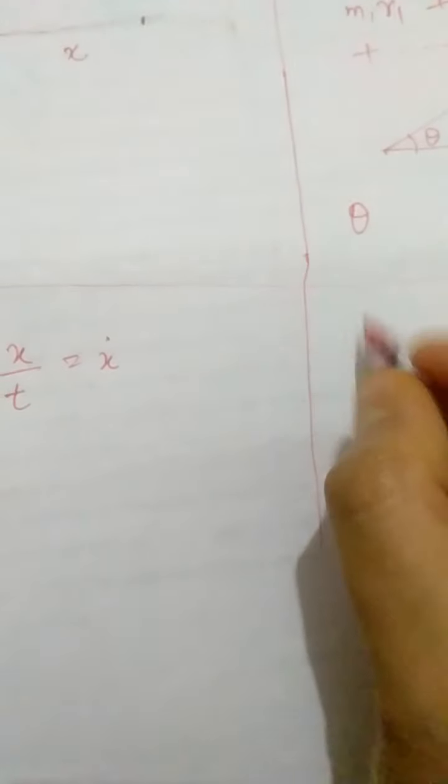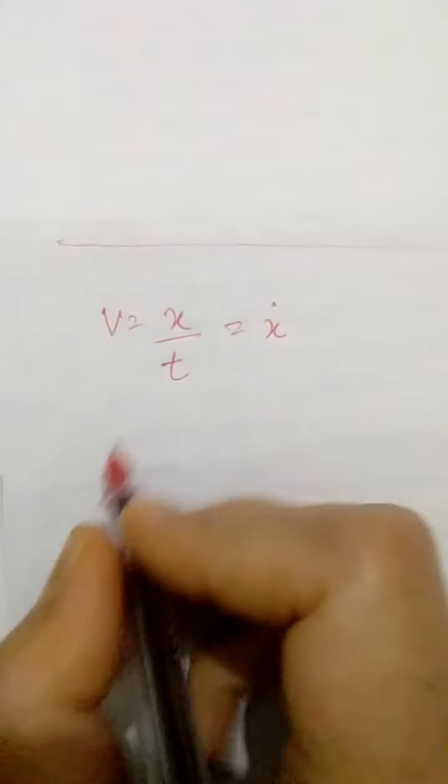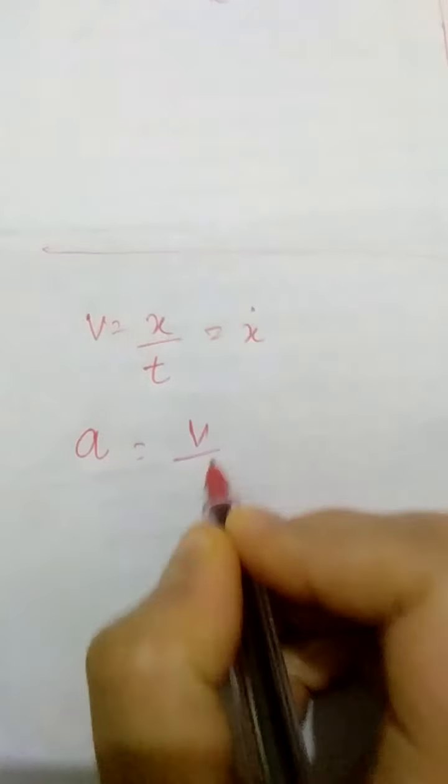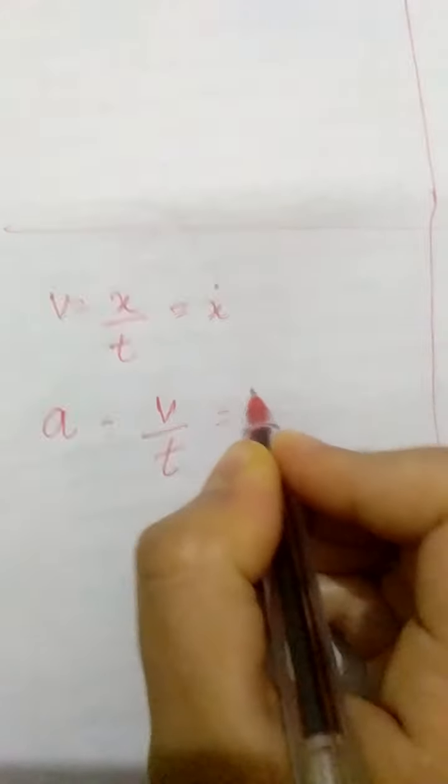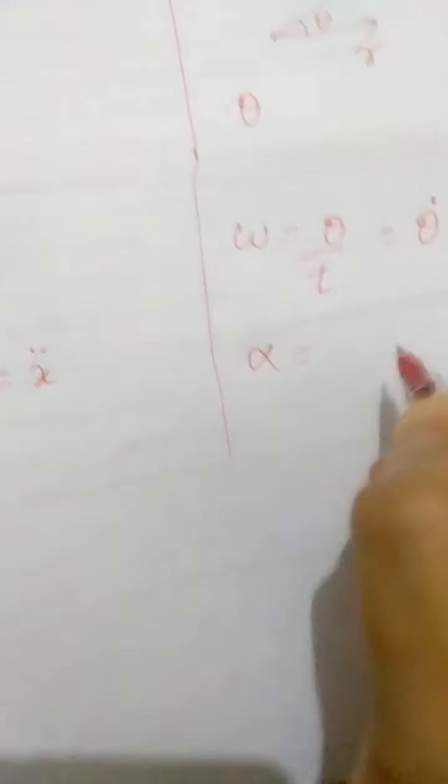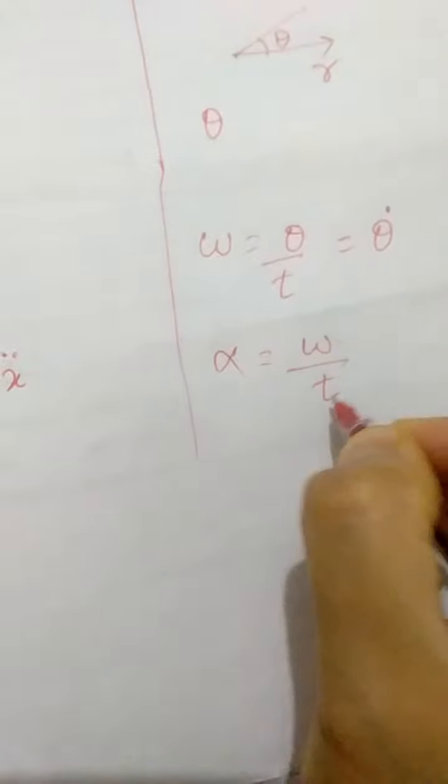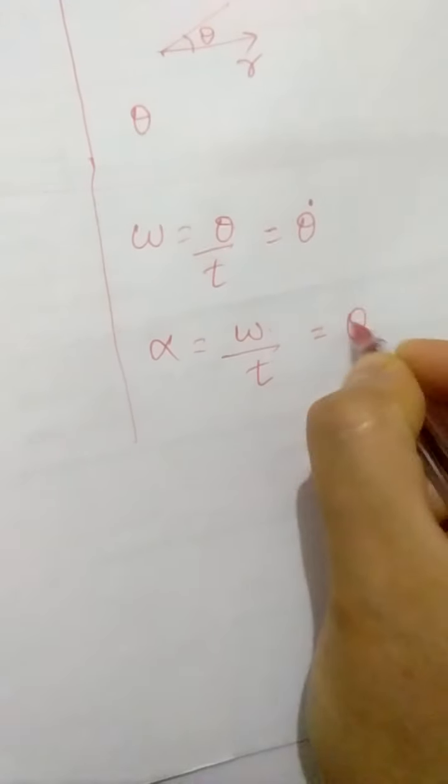In case of linear motion, we define velocity as x by t, that is distance by time, or x-dot. In rotary motion we define angular velocity: omega equals theta by t, or theta-dot. We define linear acceleration a as velocity by time, or x double-dot. In rotary motion we define angular acceleration, denoted by alpha, as omega by t — that is angular velocity by time — and that equals theta double-dot.